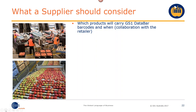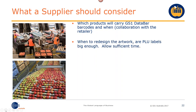Woolworths and Coles are rolling out data bar on a category-by-category basis. Last season's stone fruit was introduced first, followed by this season's apples and pears. The mango category, avocados, ladyfinger bananas, citrus, organic produce, and imports are also being targeted. The message is to exhaust your existing label stock and then, when evaluating your next print run, incorporate data bar as part of the printing process.